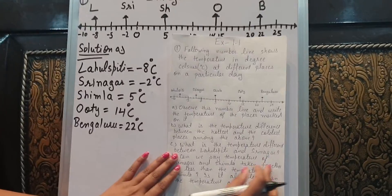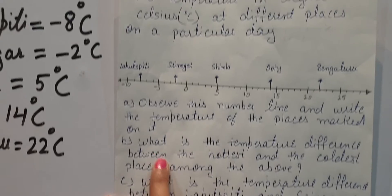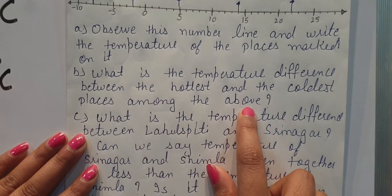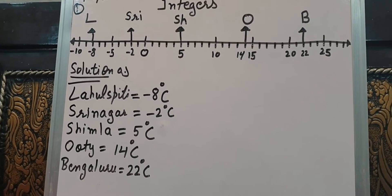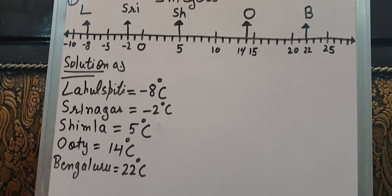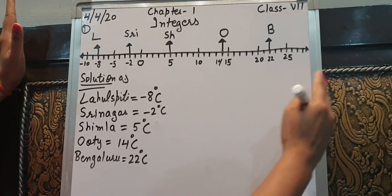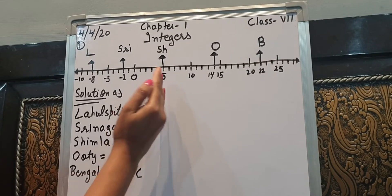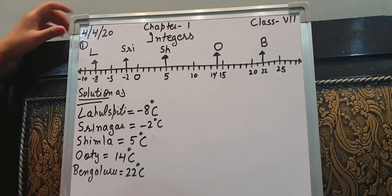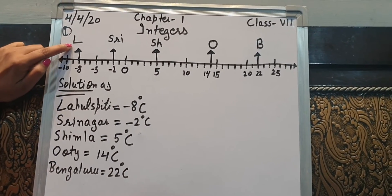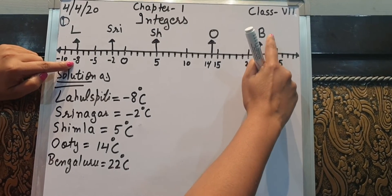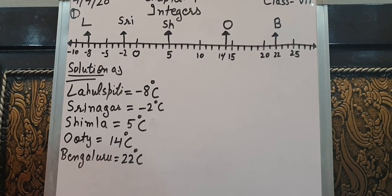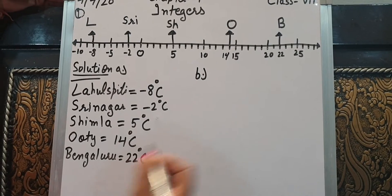Now we will read the second part carefully. Part B asks: what is the temperature difference between the hottest and the coldest places among the above? So first we will identify which is the hottest place and which is the coldest place. Bangalore is the hottest and Lahul Spiti is the coldest. We have to find the temperature difference between them.